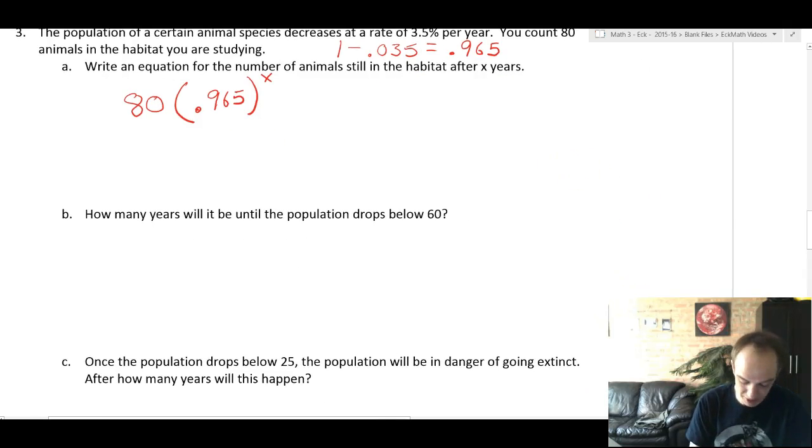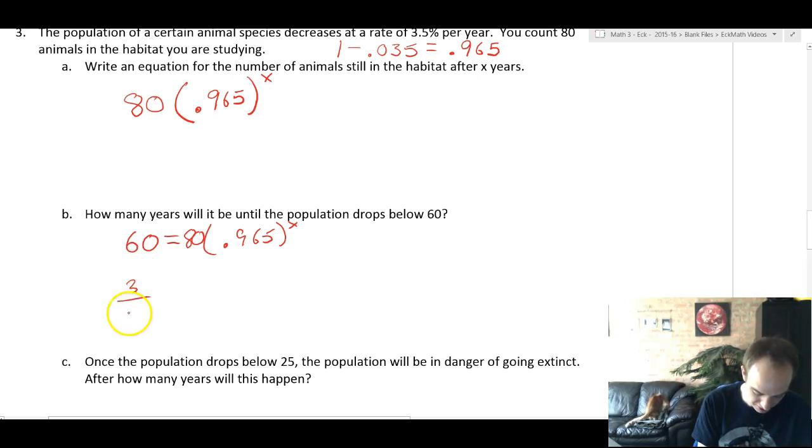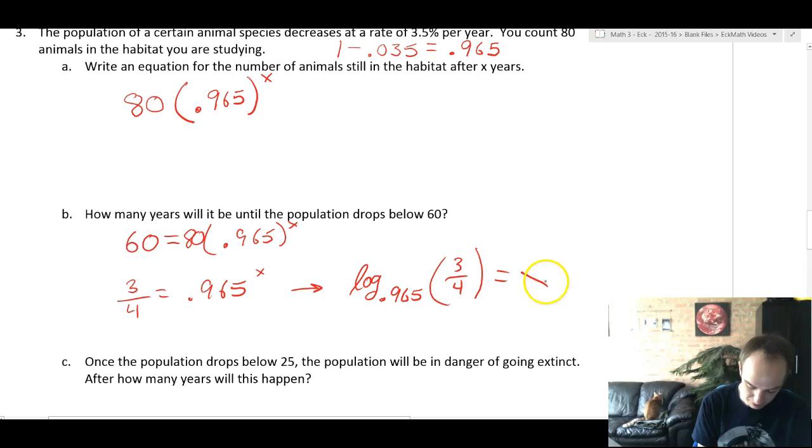How many years will it be until the population drops below 60? Set the equation equal to 60: 60 equals 80 times 0.965 to the x. So divide by 80. And you're going to get 3/4 equals 0.965 to the x. And so that's going to mean that the log base 0.965 of 3/4 will equal x.